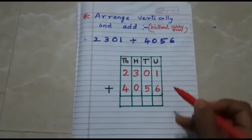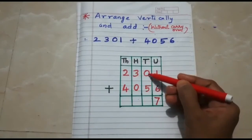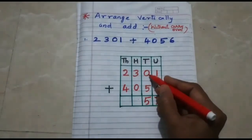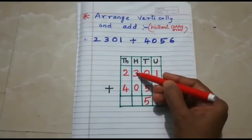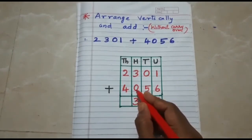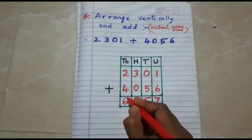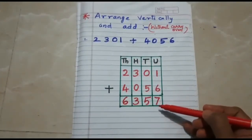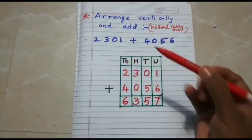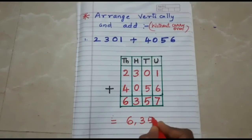Starting from units: 1 plus 6 is 7. Then tens: 0 plus 5 is 5, because 0 doesn't have any value. Then hundreds: 3 plus 0 is 3, because 0 doesn't have any value. Then thousands: 2 plus 4 is 6. So we carry out the addition starting from units, then tens, then hundreds, then thousands. The final answer is 6,357.